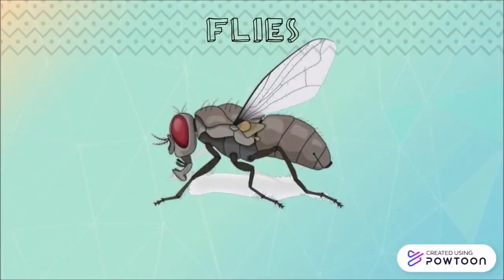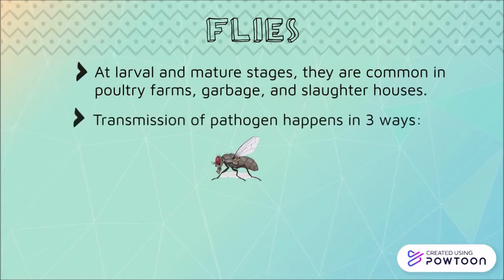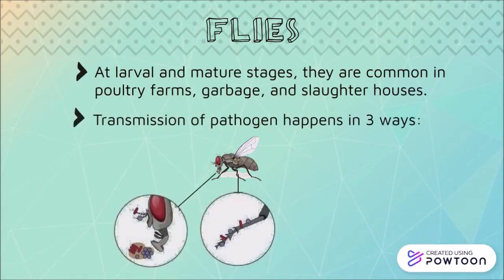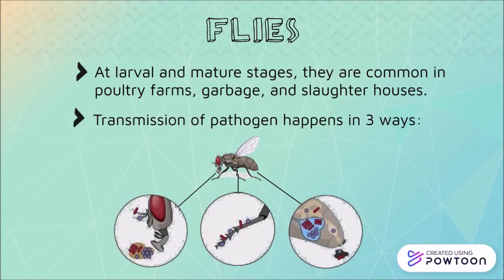Now let's talk about flies. At larval and mature stages, they are common in poultry farms, garbage areas, and slaughterhouses. Transmission of pathogens can happen in three ways: pathogens attach to the body parts such as the legs and proboscis of the flies; pathogens are deposited along with vomit drops onto the food; and pathogens are deposited in their faeces after passing through the guts.